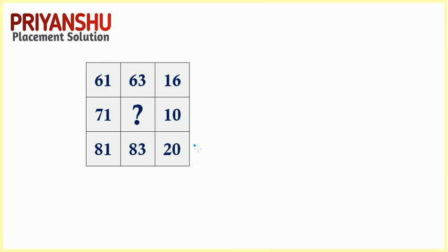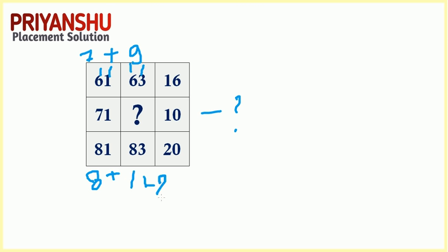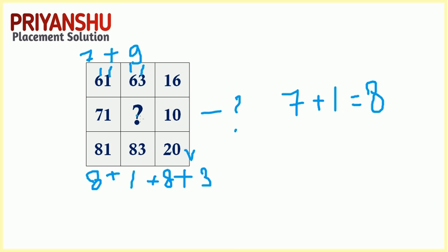Now friends, in this question, pause the screen and try it by yourself. You can see: 6 plus 1 is 7, and 6 plus 3 is 9, so 9 plus 7 is 16. For 81: 8 plus 1 plus 8 plus 3 — that gives 9 plus 17 minus 3 equals 20. And 7 plus 1 is 8. So the answer could be 20 or 2, depending on your question options. Both can be correct answers.